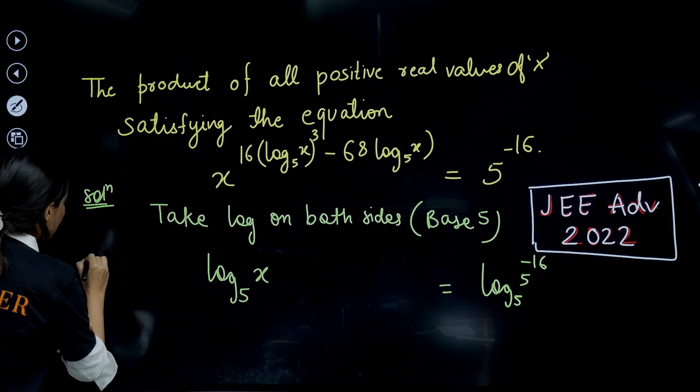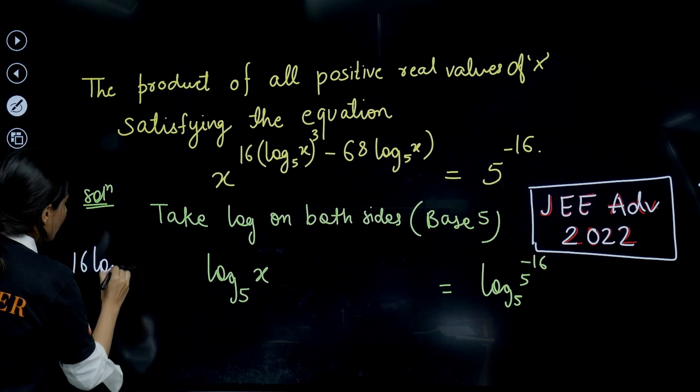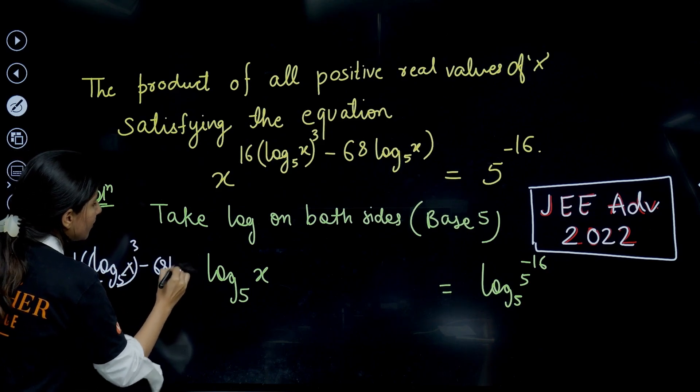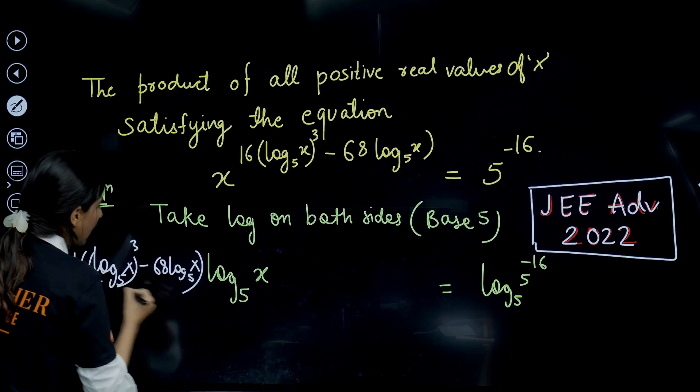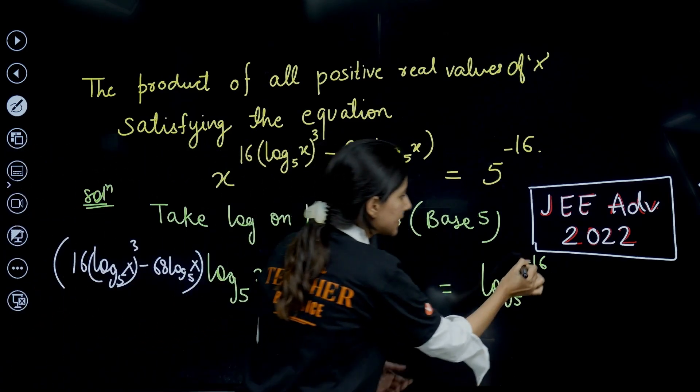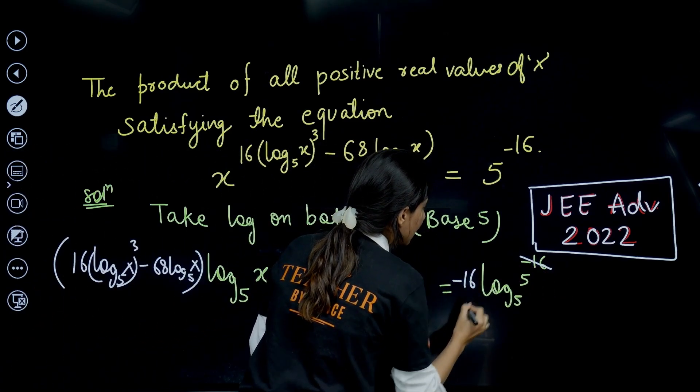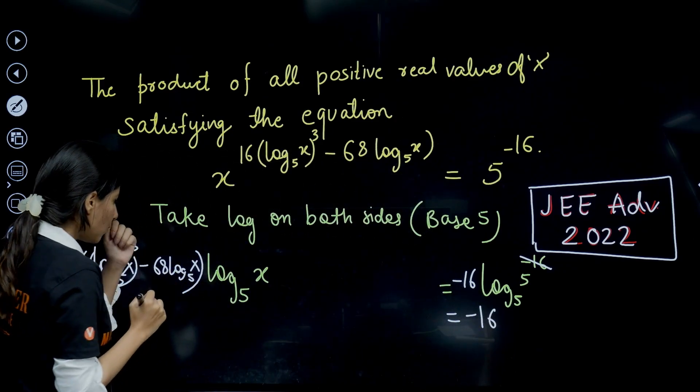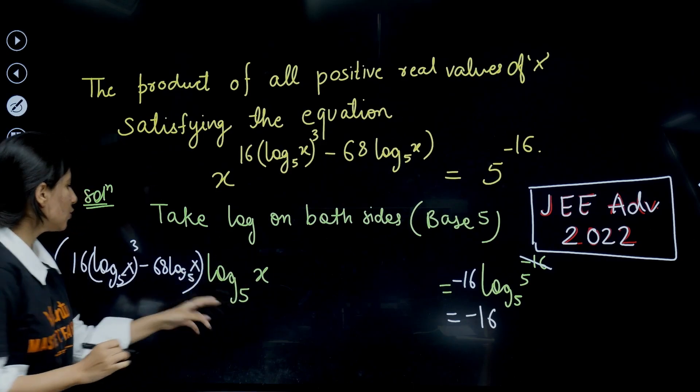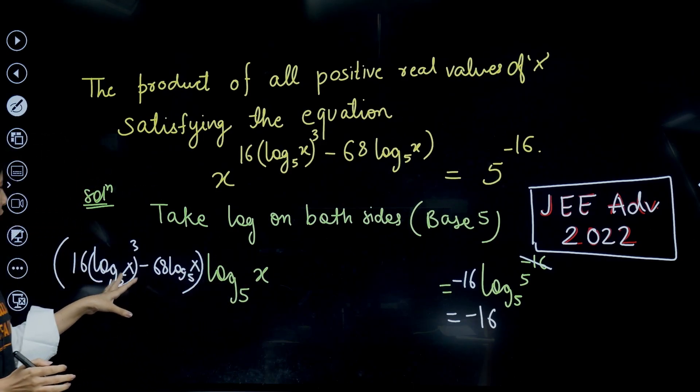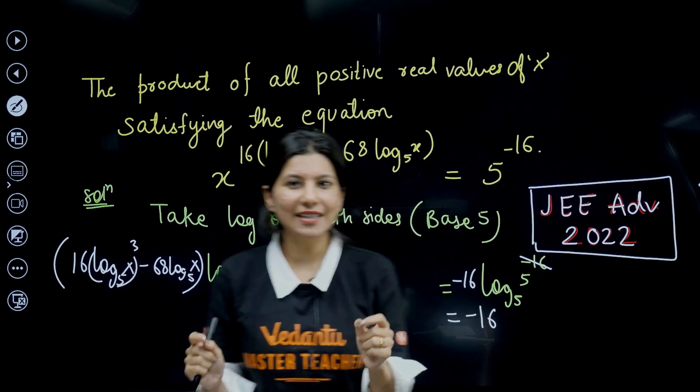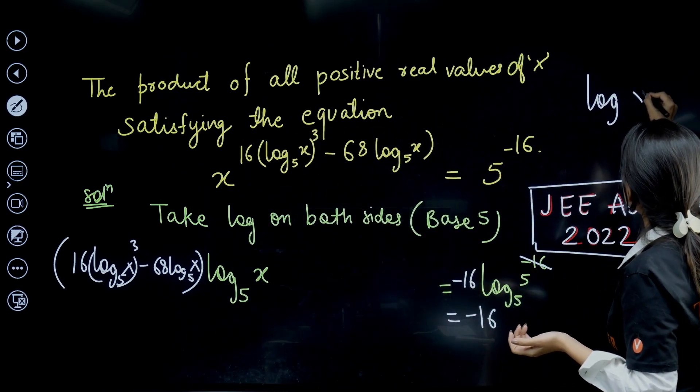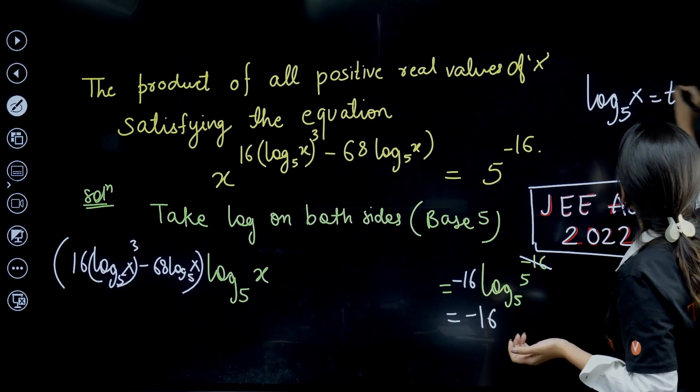I can write it over here which is 16(log x to the base 5)³ minus 68 log x to the base 5 and on the right hand side the minus 16 will come in front. Log 5 to the base 5 is what? One. So this is minus 16 finally. It is very obvious that many times I am seeing this log x to the base 5.